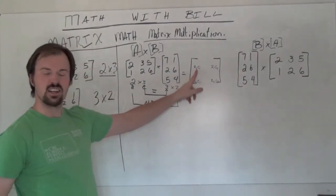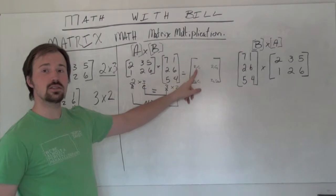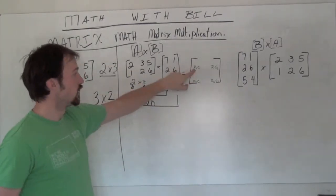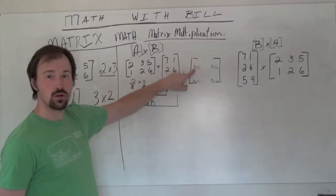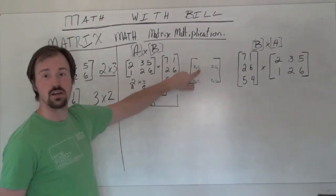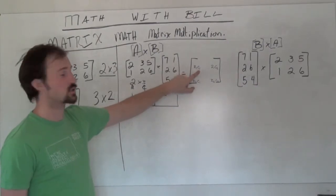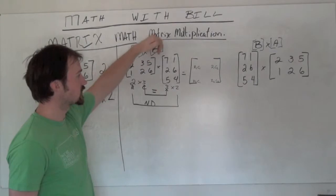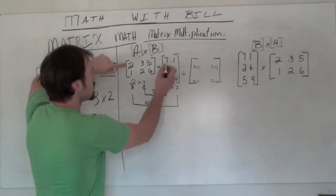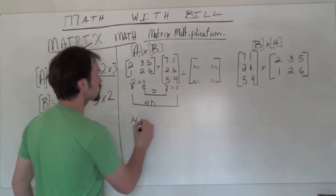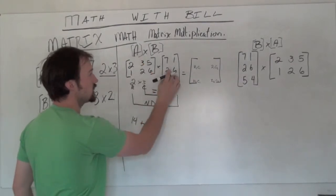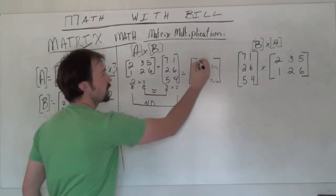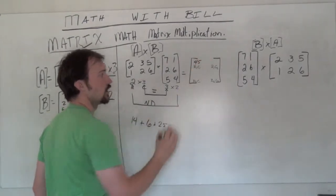The reason I encourage you to use these is because it tells us which row from the first matrix we're going to multiply times which entries, which corresponding entries of the column of the second matrix. So we're here taking row 1 of our first matrix times column 1 of the second matrix. 7 times 2 gives us 14, plus 3 times 2 is 6, plus 5 times 5 is 25 for a first entry of 45.